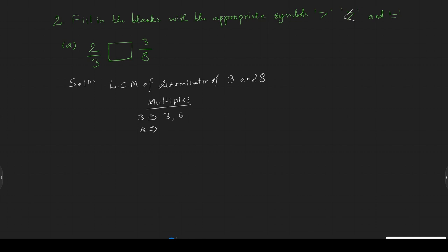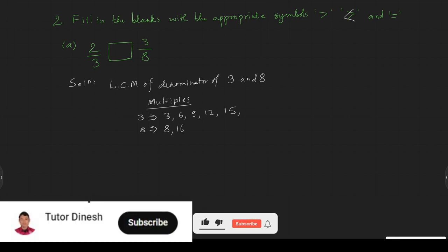Multiples of 3: 3, 6, 9, 12, 15... and multiples of 8: 8, 16, 24, 32, 40...